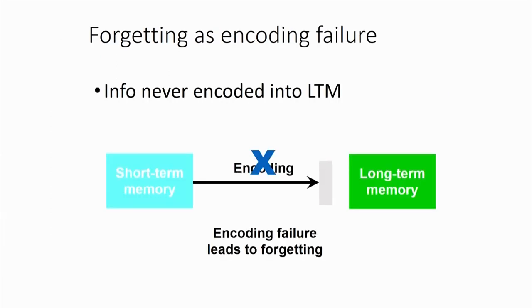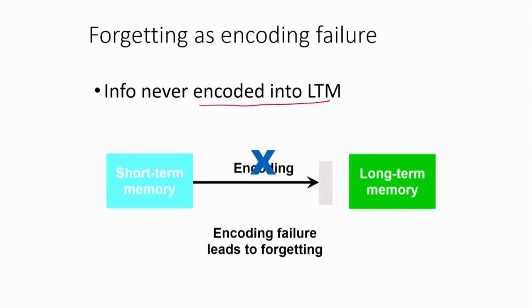The first theory says that forgetting happens from long-term memory because people never encoded that information in the first place. It could be that a piece of information was given to you and you never encoded it. For example, if asked where the tilde key is on your keyboard — people who have never used it have never encoded that information. Similarly, people who never use the function key will not know where it is because they never encoded it. This is called the encoding failure theory: information never passed from short-term memory to long-term memory.